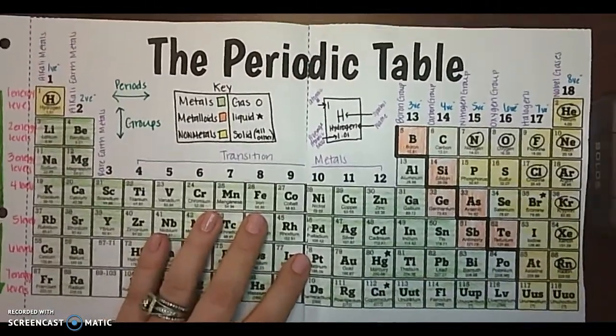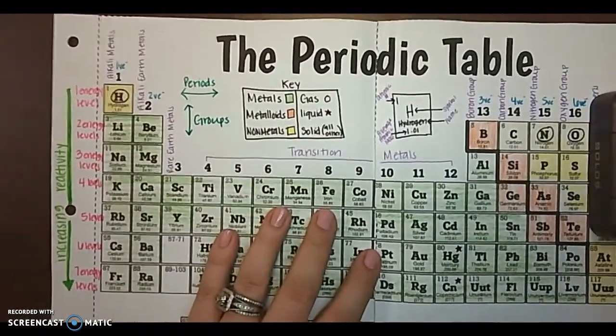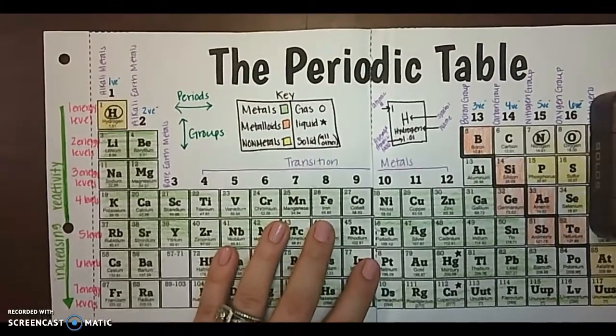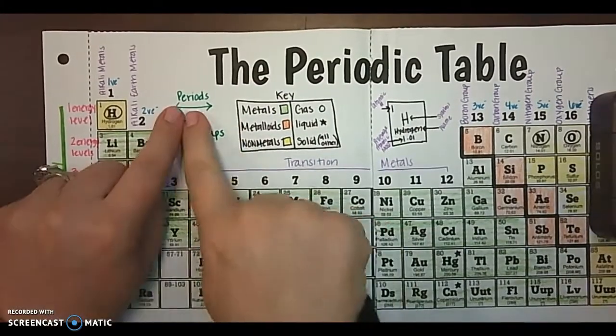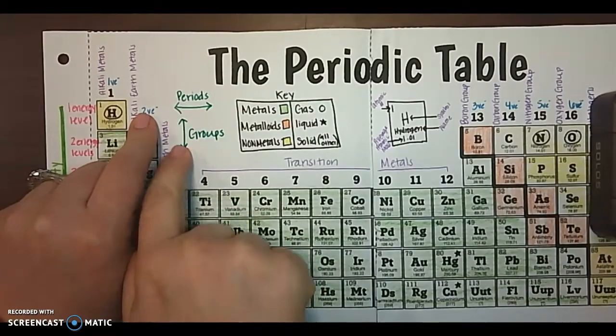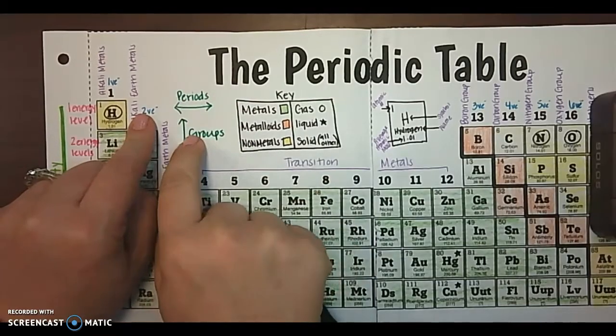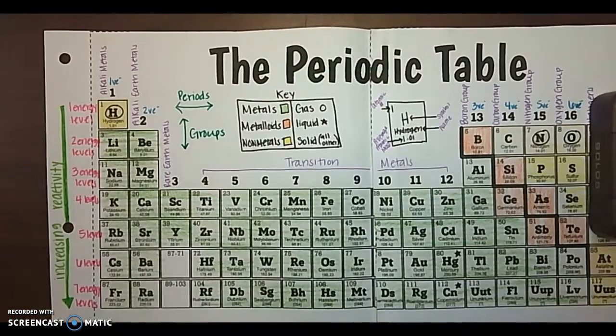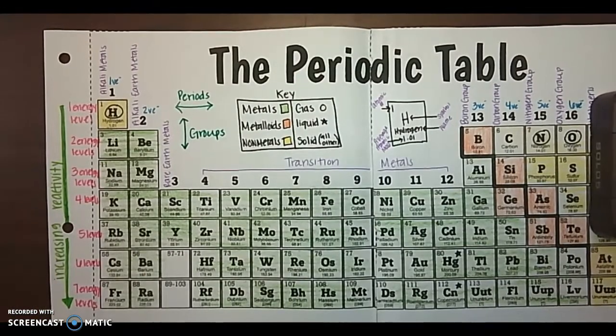So talking about the periodic table. We're going to start over here and we're going to label periods, which are horizontal and groups, which are vertical. So I would like for you to write that on your periodic table. Please try to space it similar to mine so you'll have enough room for everything.